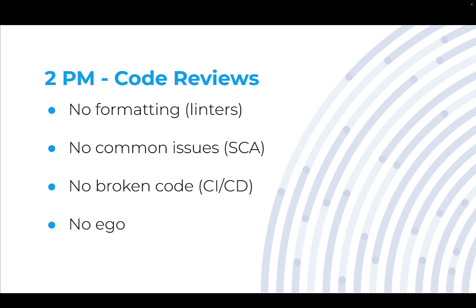The final and most important part is no ego. Code reviews aren't about junior versus senior — they're about getting another set of eyes on work. The primary function of code is to work; the secondary function is that somebody else has to understand it. We want to make sure the code we're writing makes sense and somebody else can maintain it and use it. We don't want someone to have to come in, make a trivial change, and then spend the next month reverse engineering it. We want all these tools and checks to allow us to focus on making the code readable and understandable.